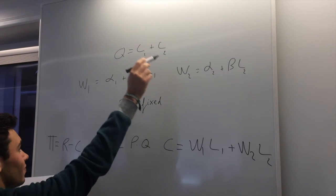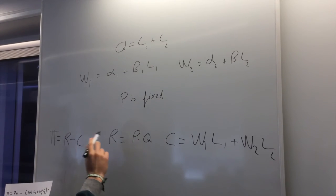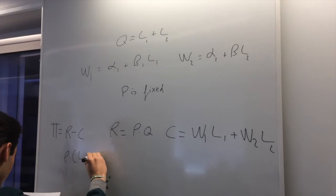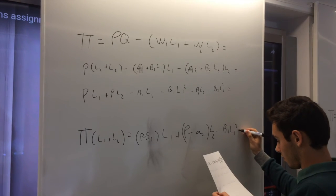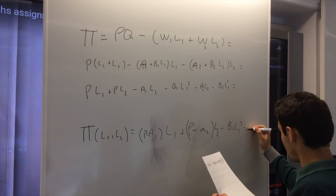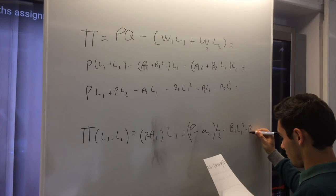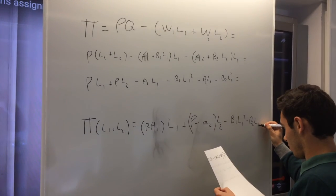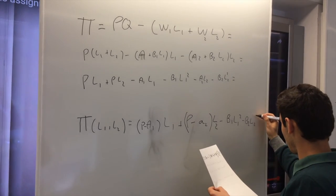This is how we find an expression of the total profit in terms of L1 and L2. W is wage, P is fixed and A1 and A2 are constants.